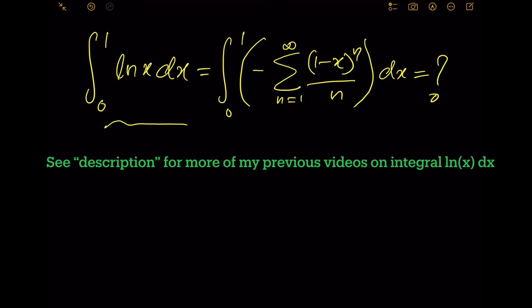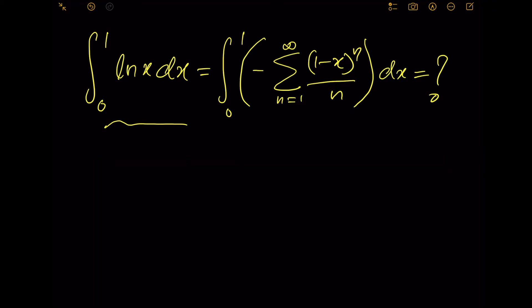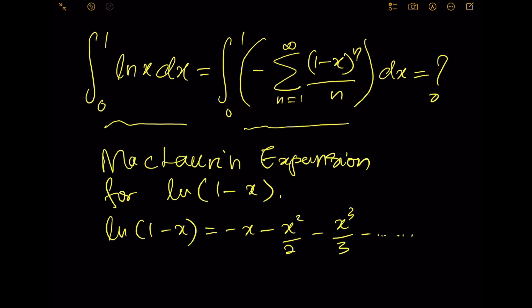Previously I have done two videos on the integral of ln(x): one using Feynman's integral and the other one using integration by parts. Today we're going to solve it using McLaurin expansion. This is the McLaurin expansion for ln(1 minus x).